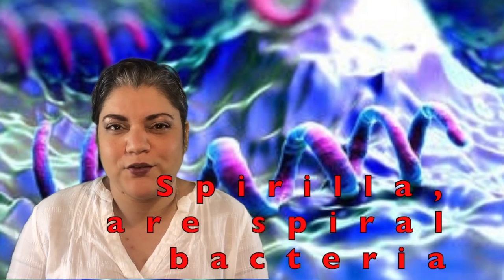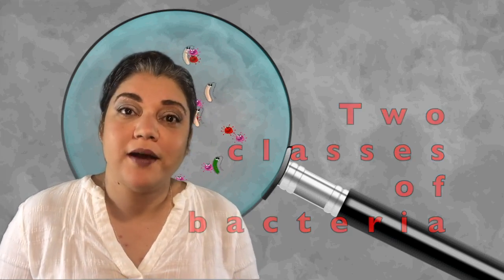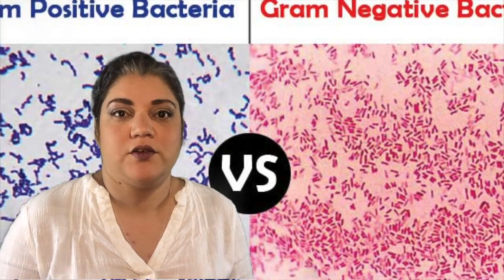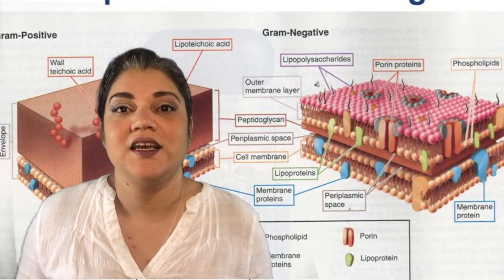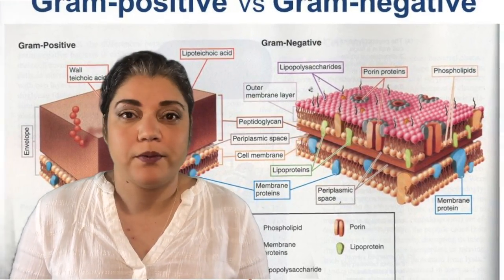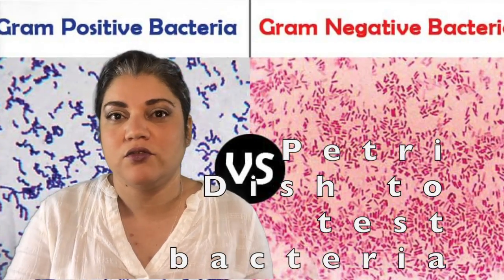You may be wondering why I'm using these comparisons — it's because I want them to embed into your memory. Now there are two classifications for bacteria: gram-positive and gram-negative. Gram-positive bacteria have a thick cell wall that stains purple.